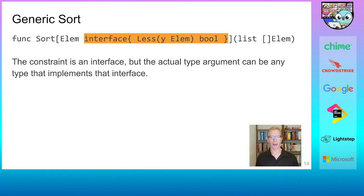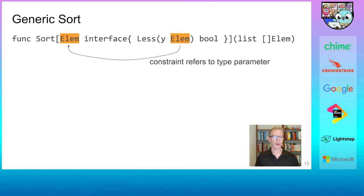With this, we can now complete our generic sort signature. We simply provide an interface with a less method as a constraint. What we are saying here is this. Sort is a generic function that can operate on slices of any element type, as long as that element type specifies, that is, implements, the given constraint. Or in our case, as long as it implements a less method. So keep in mind that even though the constraint is an interface, the actual type argument does not need to be an interface. In fact, it almost never will be.